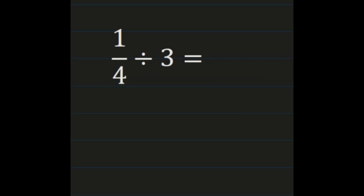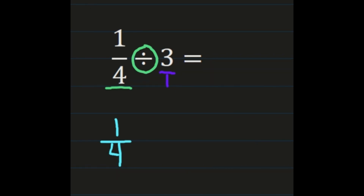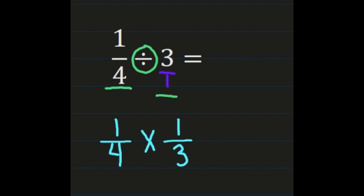Our second example is a unit fraction divided by a whole number: one-fourth divided by three. We're going to work it the same way. Looking at our whole number, we have to turn it into a fraction — three as a fraction is three over one. Then we work through our division steps. This first number, one-fourth, stays exactly the same. Looking at our division sign, that division sign is becoming a multiplication sign. And then the second number, three over one — we're multiplying by the reciprocal of three over one, which is one-third. Our denominator becomes the numerator and the numerator becomes the denominator.